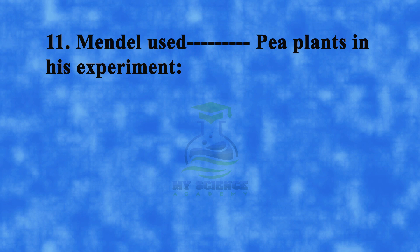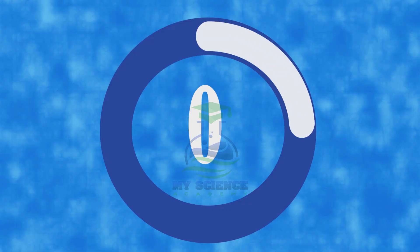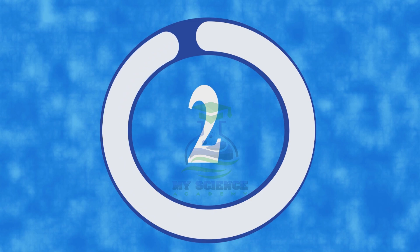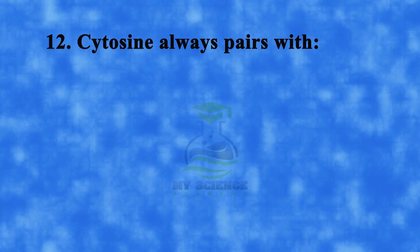Question 11: Mendel used how many pea plants in his experiment? A. 2800, B. 28000, C. 280000, or D. 2.8 million. Correct answer is B. 28000.